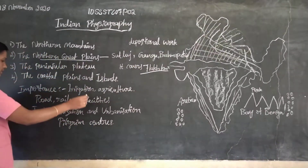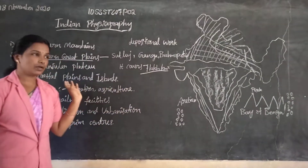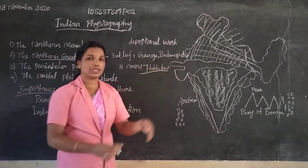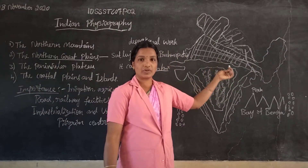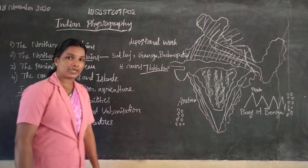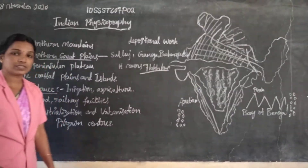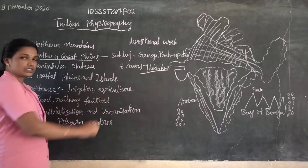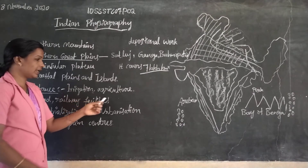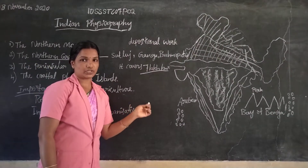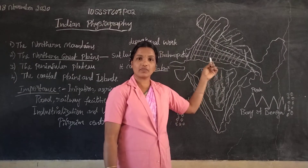What are the importances of the Northern Great Plain? The land is very fertile, and many rivers are flowing here, filled with water throughout the year. That helps in improving Indian agriculture. Irrigation facility is there — irrigation means supplying water to the agricultural land from rivers or any source. That helps to improve agricultural production because water is there, rivers are there, flat land is there, and alluvial fertile soil is there, which helps to yield more.